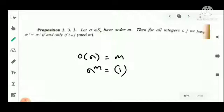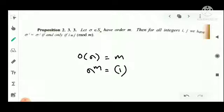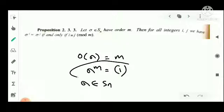The order M is the smallest positive integer such that sigma to the power M equals the identity. We look at sigma raised to i equal to sigma raised to j — that is, two powers i and j — and we need i minus j to be a multiple of M.